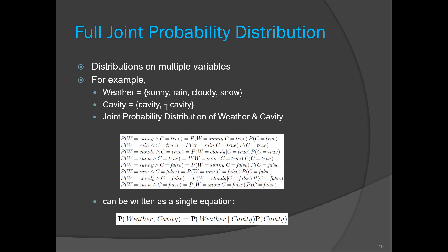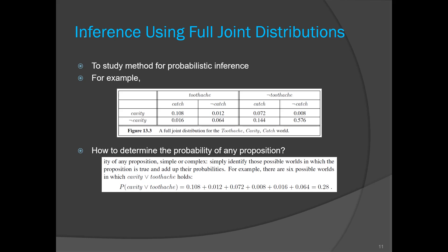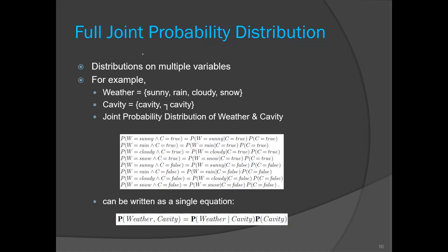Today we are going to study inference using full joint distribution. First, let us discuss what full joint distribution is. In the previous class we talked about probability distribution when we have a single variable. But what if we have multiple variables? Consider an example where we have two variables: weather and cavity.